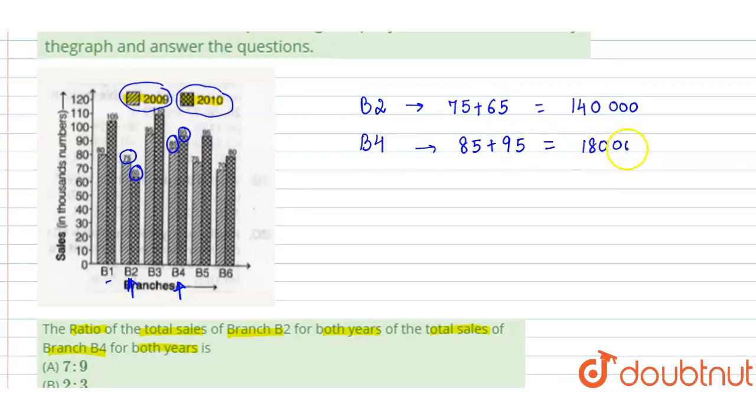Now we divide to find the ratio. B2 to B4 is 140,000 divided by 180,000.